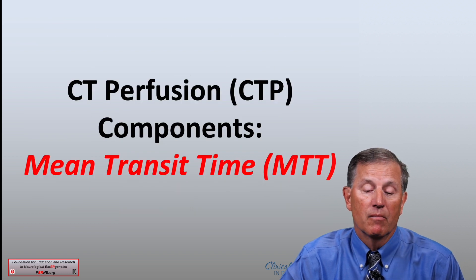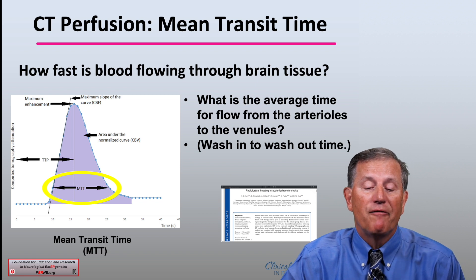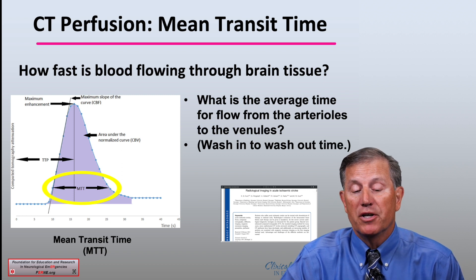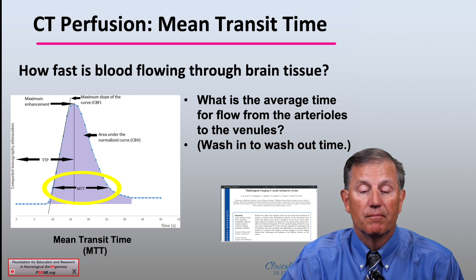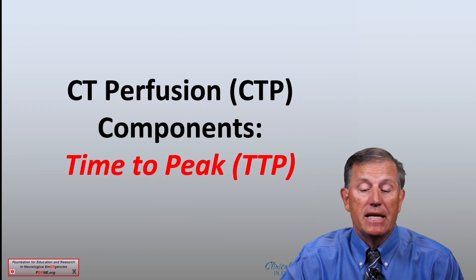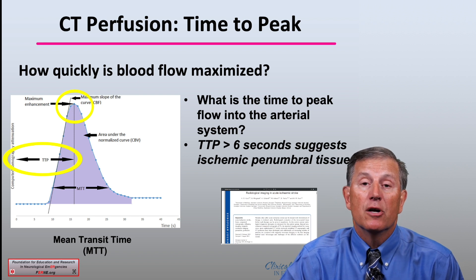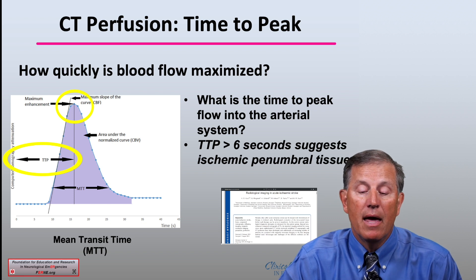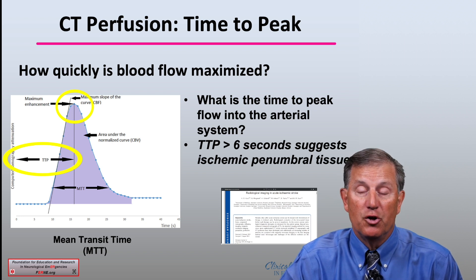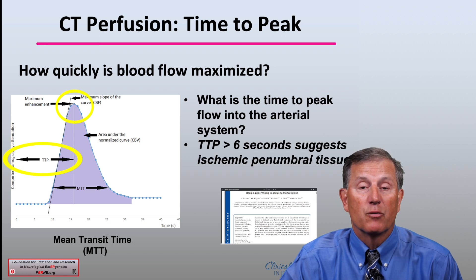Mean transit time talks about how fast blood is flowing through the brain tissue — the average time for flow from the arterioles to the venules through the tissue. This is your wash-in to wash-out time for the contrast. Time to peak talks about how quickly blood flow is maximized through the tissue that is at risk — the time to peak flow into the arterial system so that oxygen can be carried to the at-risk tissue. A time to peak of greater than six seconds suggests ischemic penumbral tissue, which is at risk and which will benefit from activities that resolve the clot and restore blood flow.